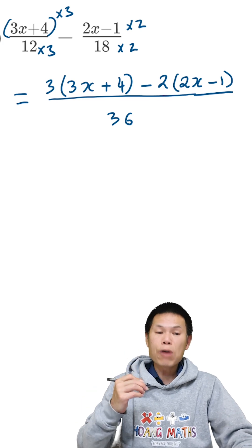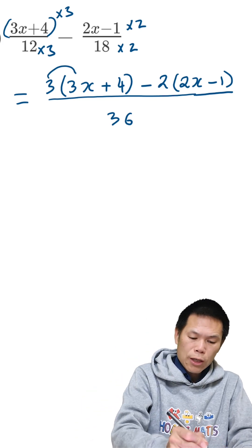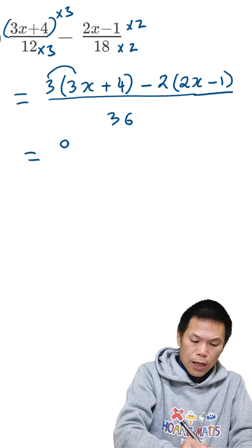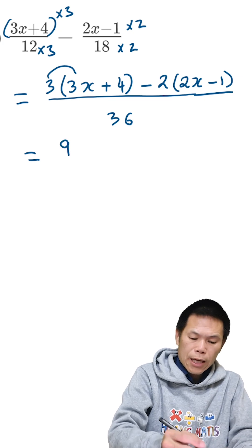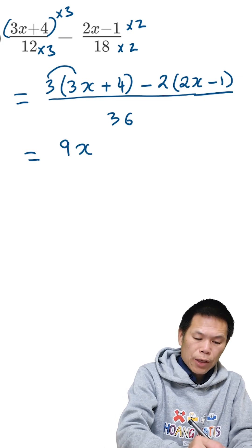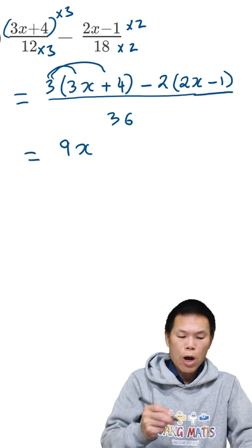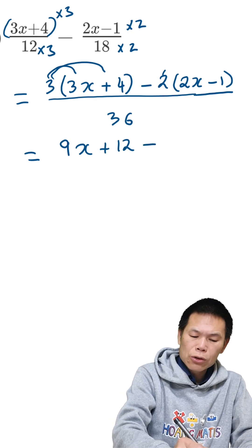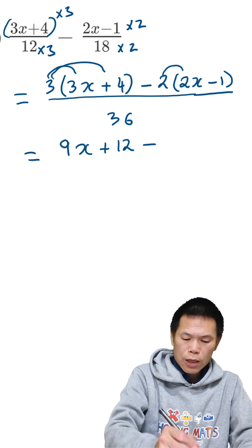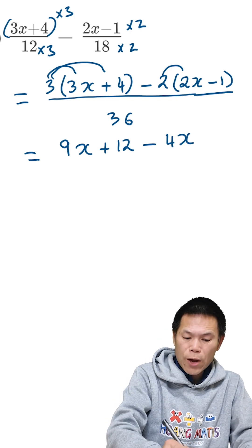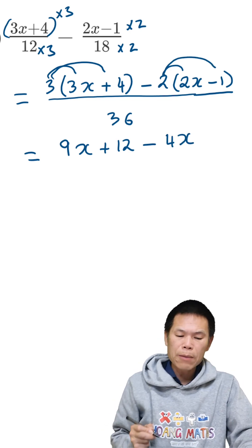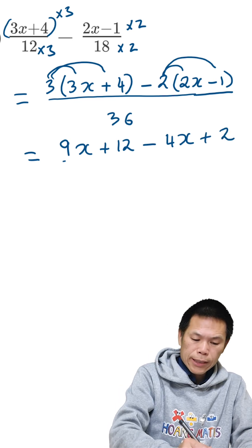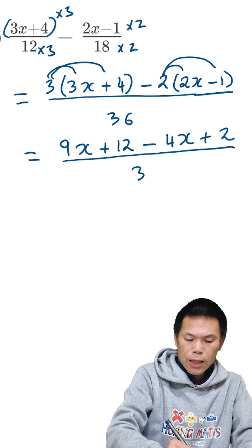So now I just remove the brackets. So 3 times 3 gives me 9, so that is equal to 9x, this times that gives me 12, so plus 12. And we minus — negative 2 times 2 gives me negative 4x. Negative 1 times negative 2 gives me positive 2, so that is add 2. Over 36.